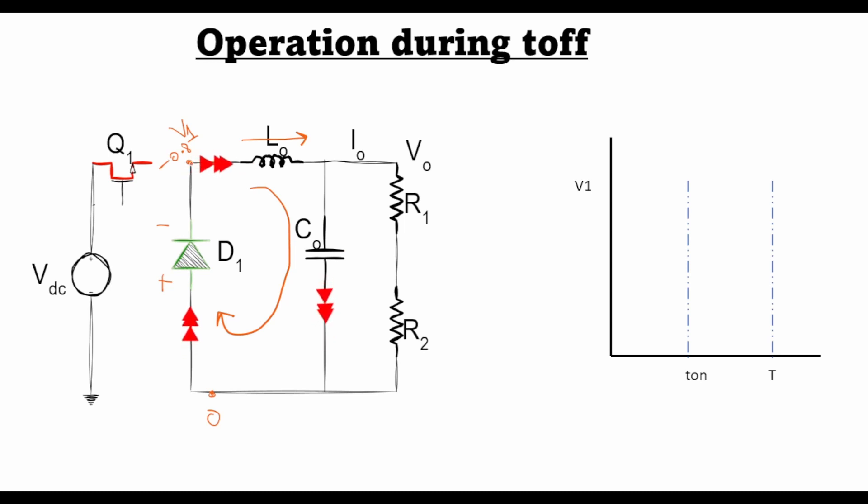But this voltage at this point, if we assume that the diode is ideal, we can assume that this voltage is 0. So during t_off period, the voltage at this intermediate point between output and input can be assumed to be 0.